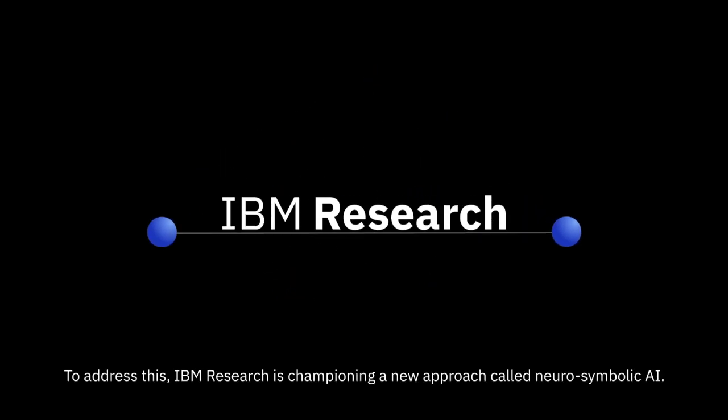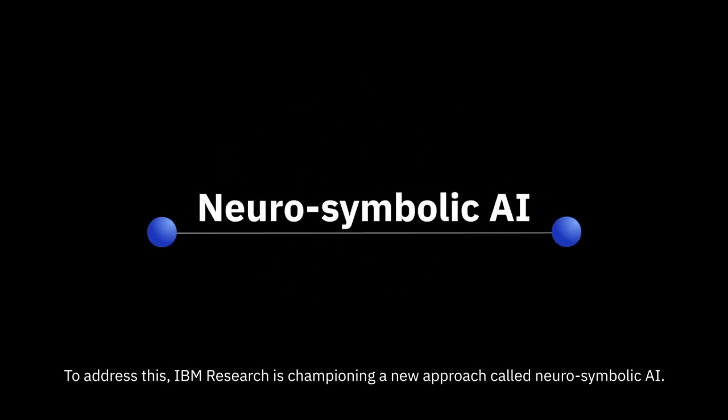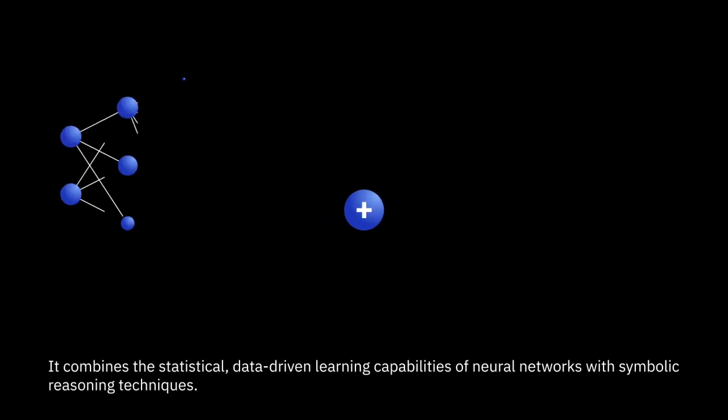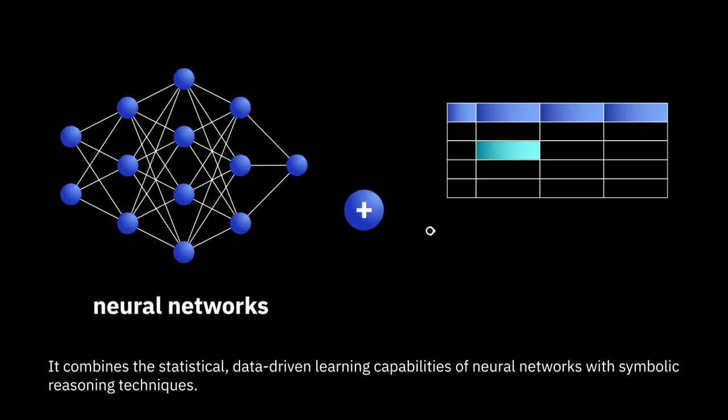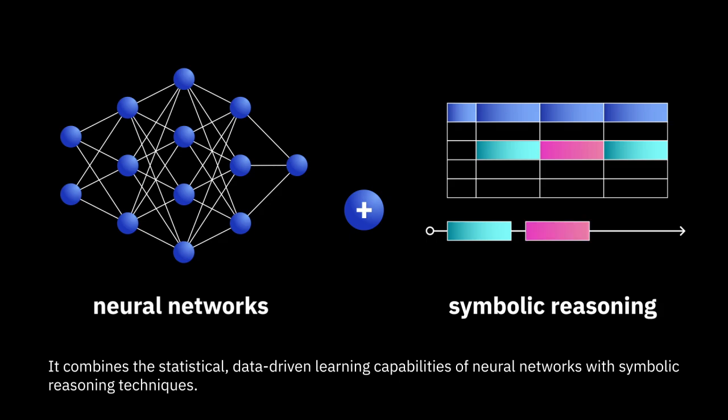To address this, IBM Research is championing a new approach called Neurosymbolic AI. It combines the statistical, data-driven learning capabilities of neural networks with symbolic reasoning techniques.